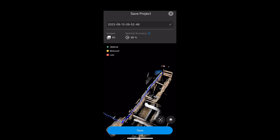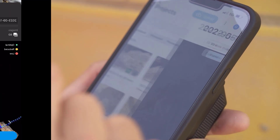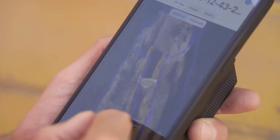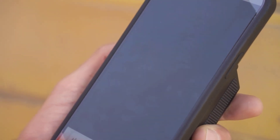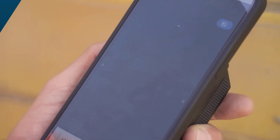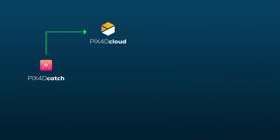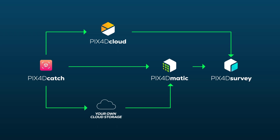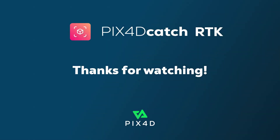You can upload your dataset to Pix4D Cloud when you have a solid internet connection, either with a SIM card in the mobile device, a hotspot with another mobile device, or by connecting to a Wi-Fi network. Another option is to transfer your images to a computer and process your project locally with Pix4D Matic or Pix4D Mapper. We hope this tutorial video was helpful. See you in the next video.